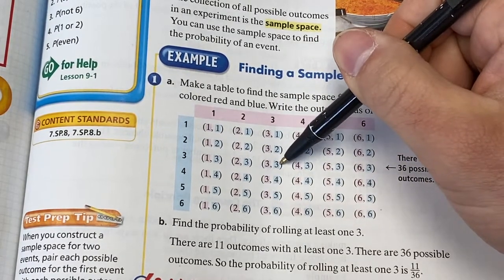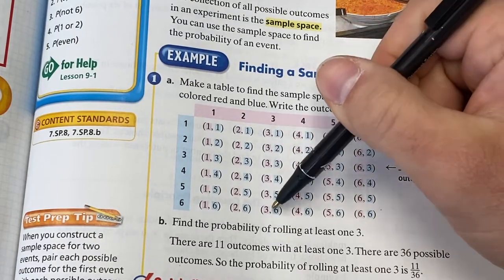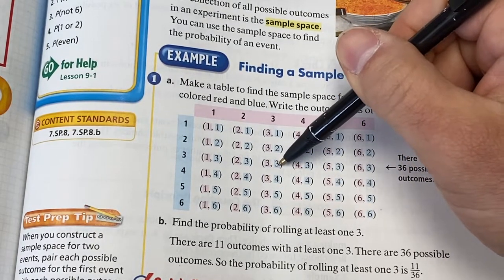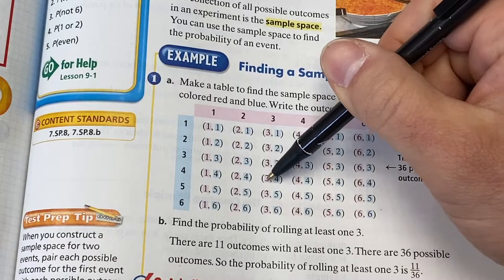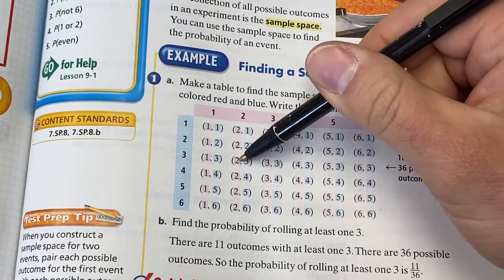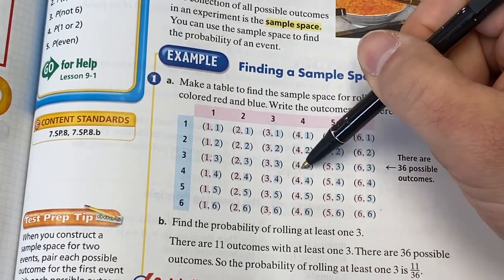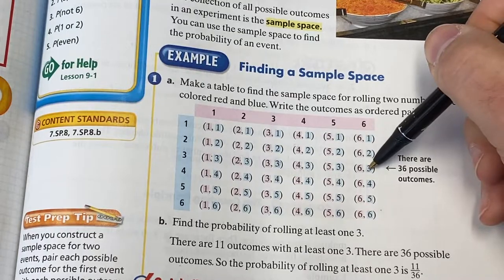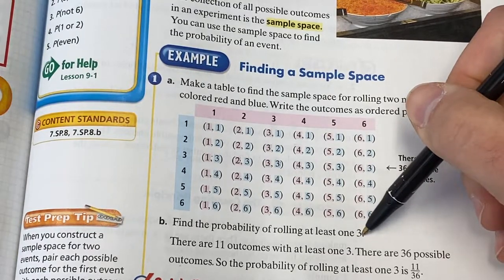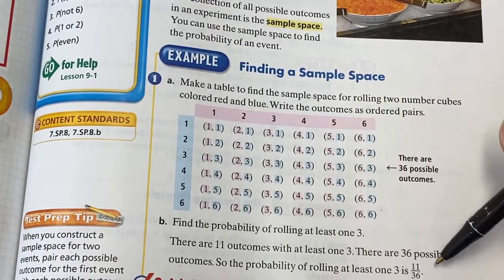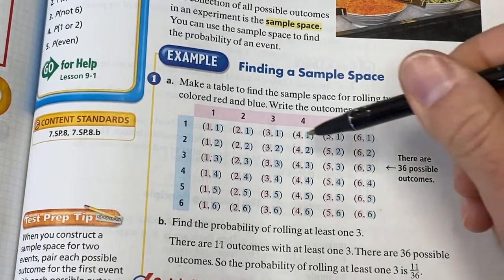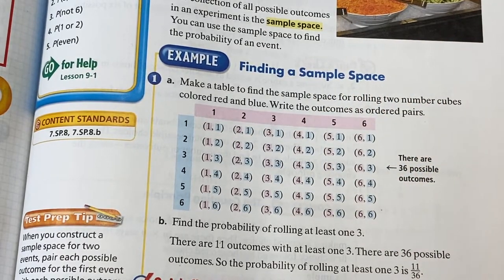So you don't want to count it twice. So if you counted these all up, not counting this one twice. One, two, three, four, five, six, seven, eight, skip it, nine, ten, eleven. The probability of rolling at least one three is eleven out of thirty-six. Eleven of these thirty-six outcomes have at least one three.